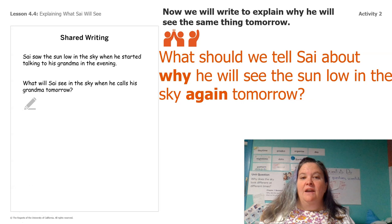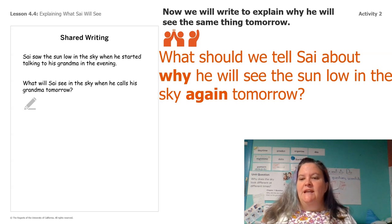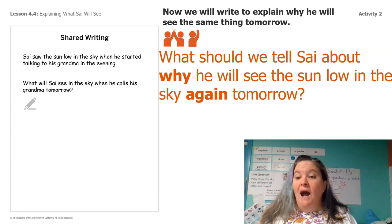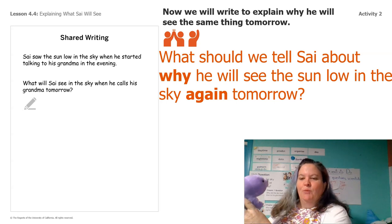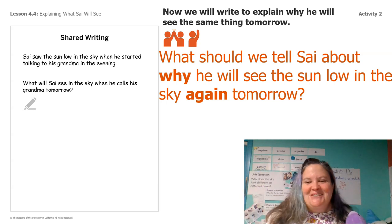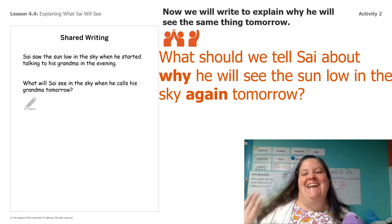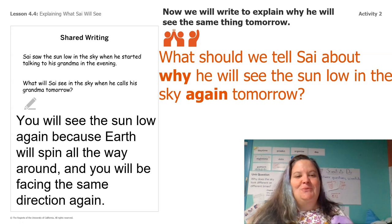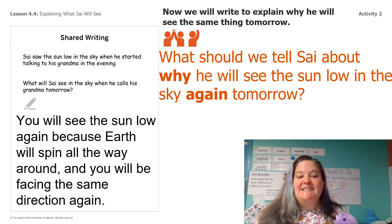Now that we've told Sai what he's going to see, we need to tell him why he's going to see that. Talk to your partner — what should we tell Sai about why he'll see the sun low in the sky again tomorrow? Because the earth spins! So let's write that as a full sentence: You will see the sun low again, because earth will spin all the way around, and you'll be facing the same direction again.